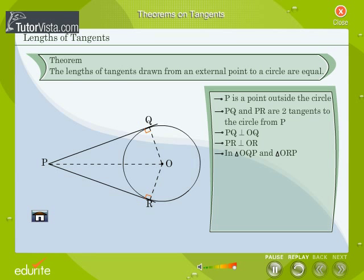In right angle triangles, triangle OQP and triangle ORP, OQ is equal to OR because they are the radii of the same circle.